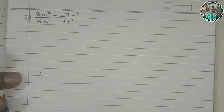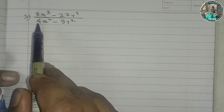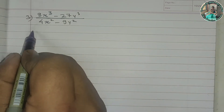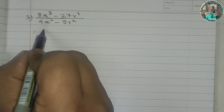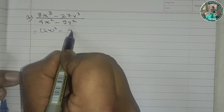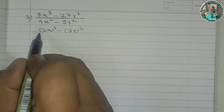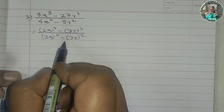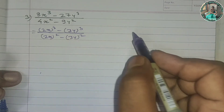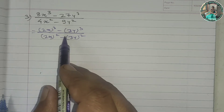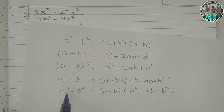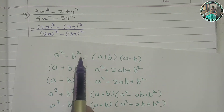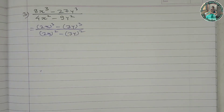Now we apply the a² − b² formula and a³ − b³ formula. We have 8x³, which is (2x)³, and 27y³, which is (3y)³, since the cube root of 27 is 3. The denominator has a² − b², which factors as (a + b)(a − b), i.e., (2x + 3y)(2x − 3y). We apply two formulas to solve the question.